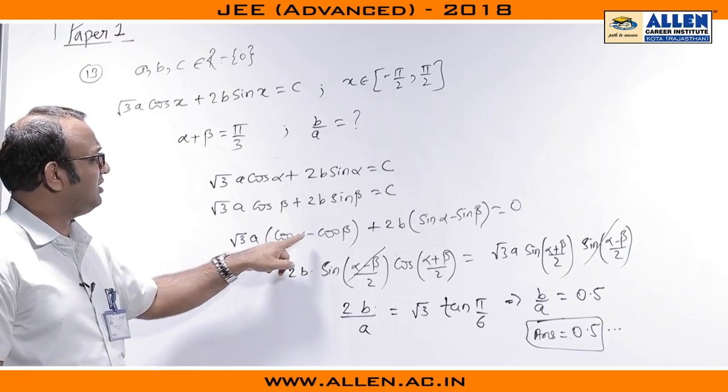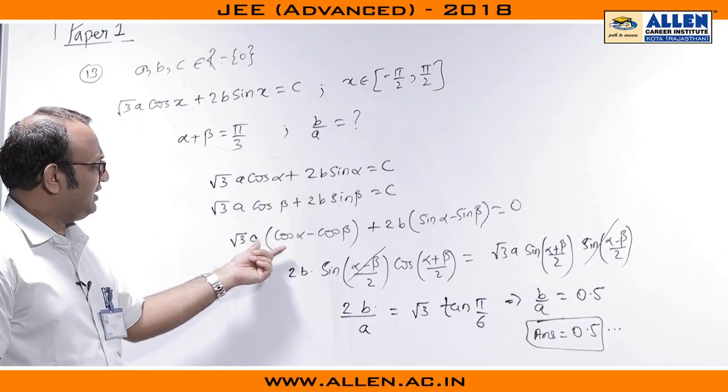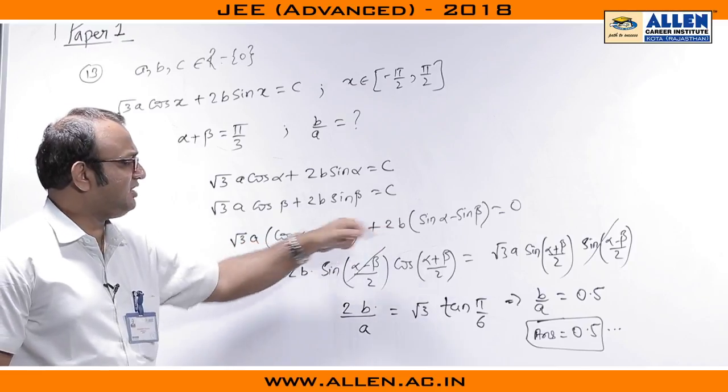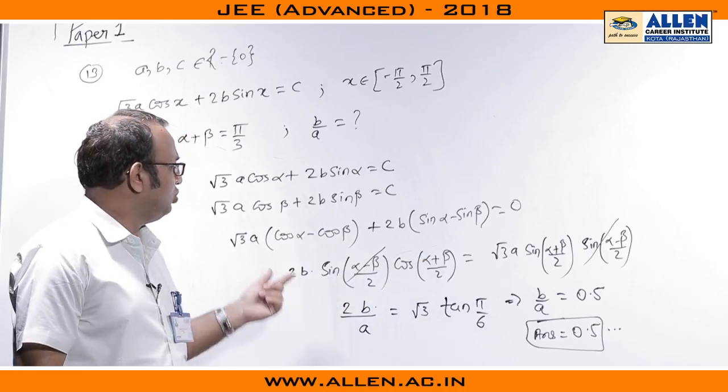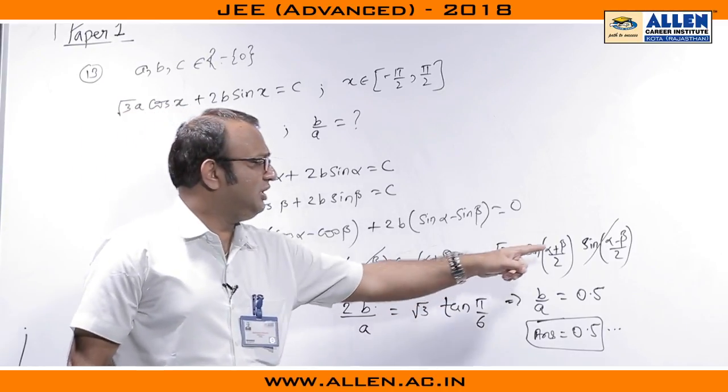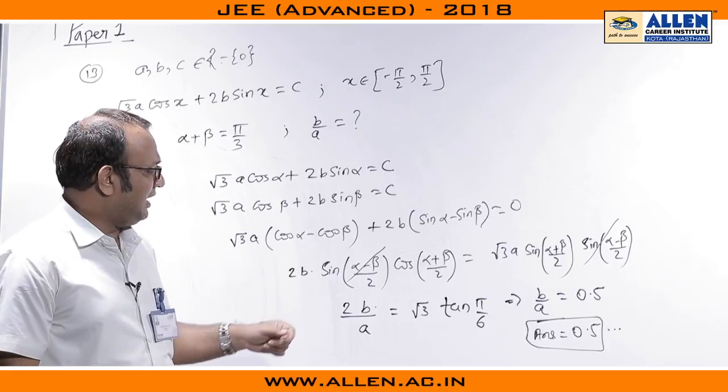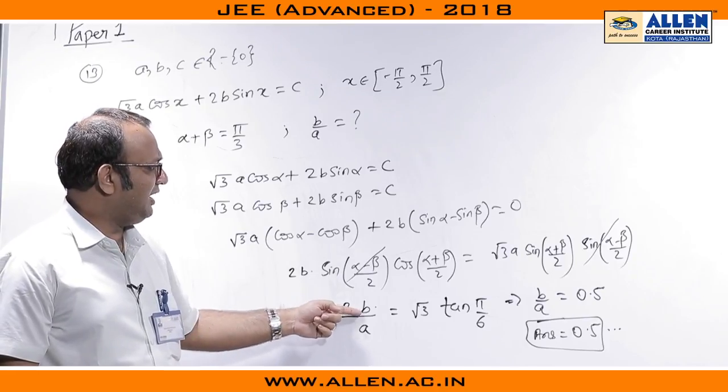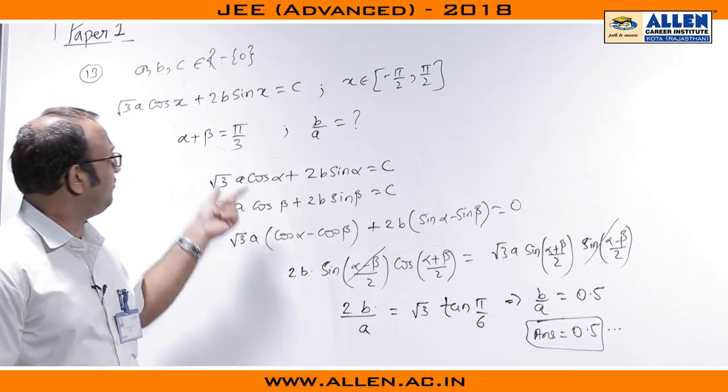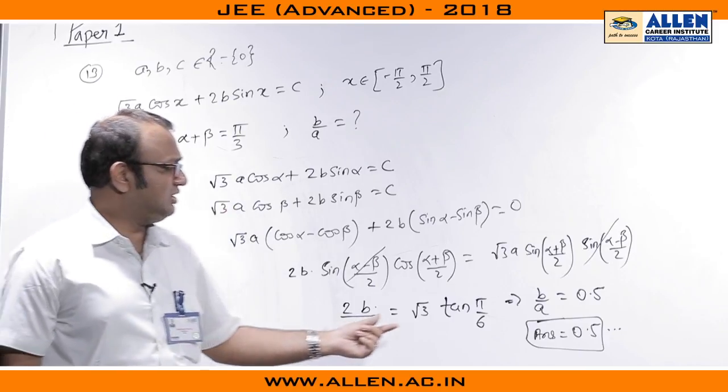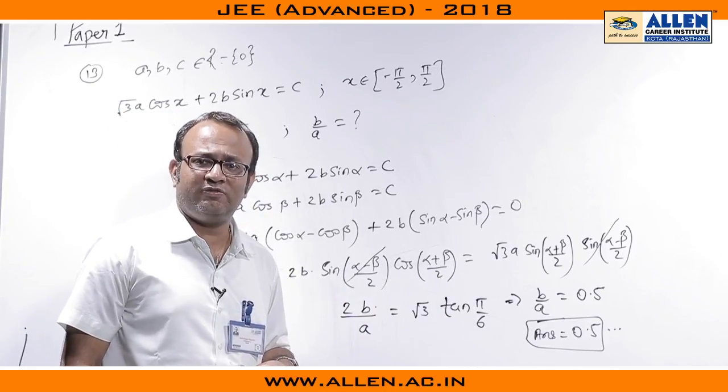So we have got root 3 A cos alpha minus cos beta plus 2 B times sin alpha minus sin beta equals to 0 and we can just apply cos C minus cos D here and sin C minus sin D here. So we are having 2 B sin alpha minus beta by 2 into cos alpha plus beta by 2 equals to root 3 A sin alpha plus beta by 2 into sin beta minus alpha by 2, but that minus will be negated as we have taken the term over there and therefore, it results to us in 2 B by A equals to root 3 times tan alpha plus beta by 2. Now, the value of alpha plus beta is given to be pi by 3. So it is tan pi by 6 which is 1 by root 3. So value of B by A comes out to be half and that is 0.5. So the answer to this question must be 0.5.